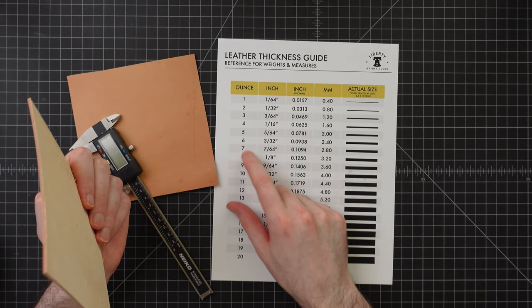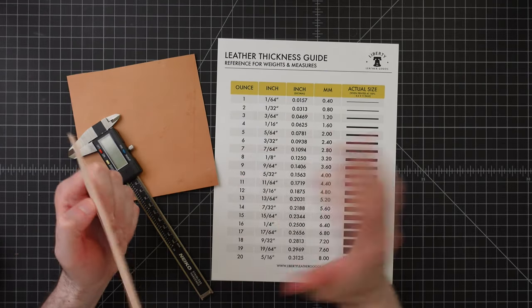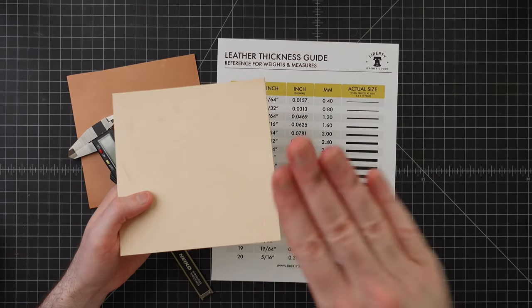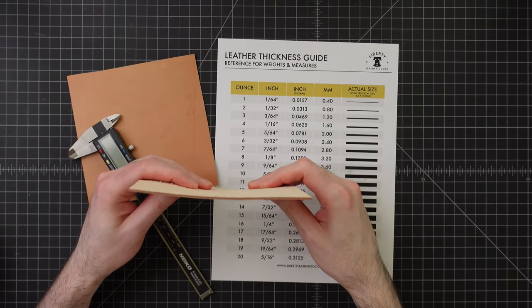So when we're looking, we're going to see that range, 2 to 3, 5 to 6, etc. And that explains the variance in the thickness, just because it's natural.